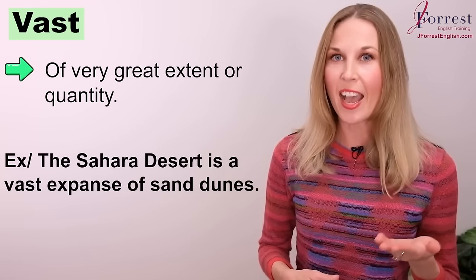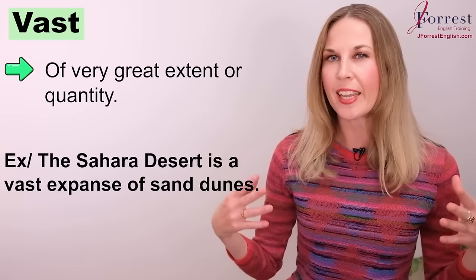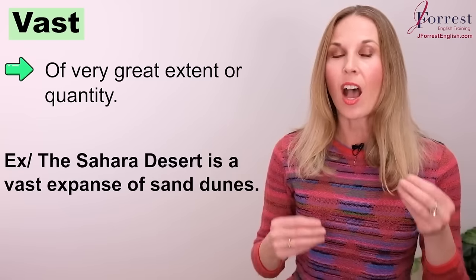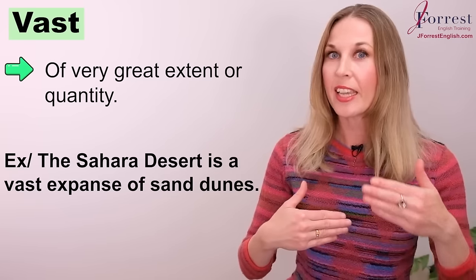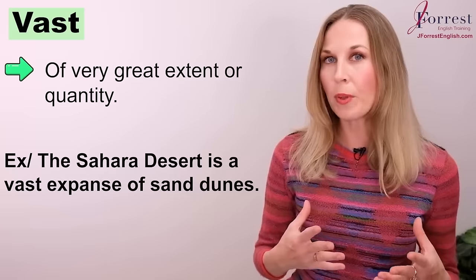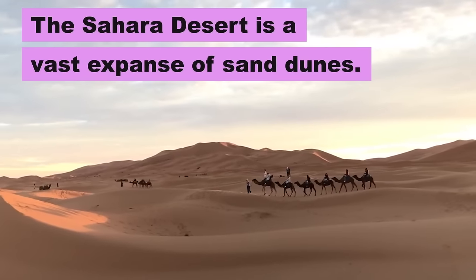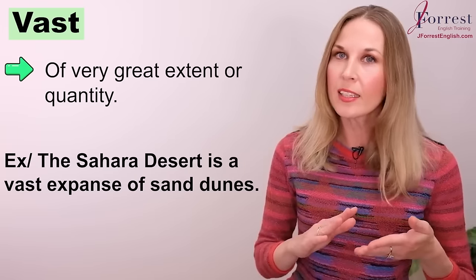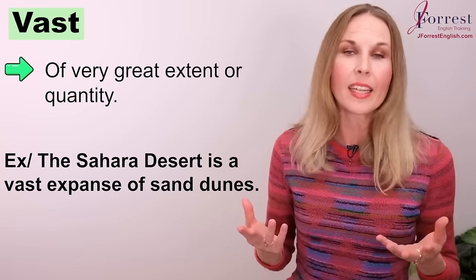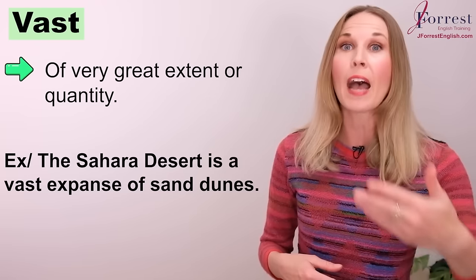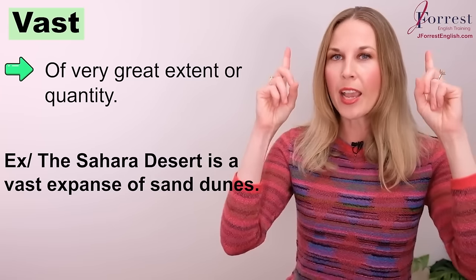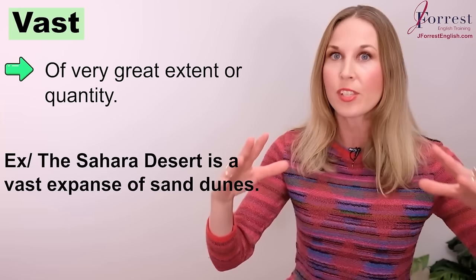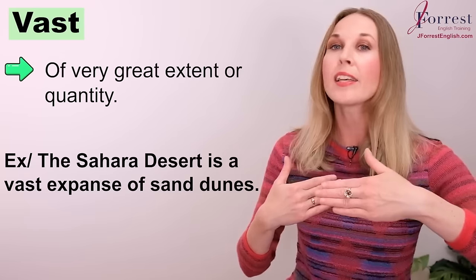Vast. This means a very great extent or quantity. When I hear vast, I know the extent is very great. For example: the Sahara Desert is a vast expanse of sand dunes. I know there are many sand dunes in the desert, but when I hear 'vast,' the image in my mind changes and I see sand dune after sand dune after sand dune — because it's vast.